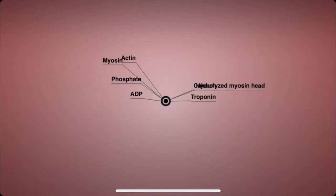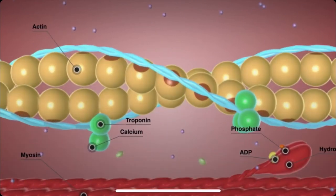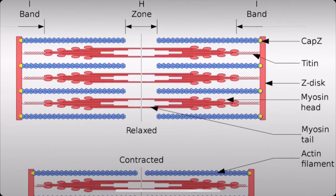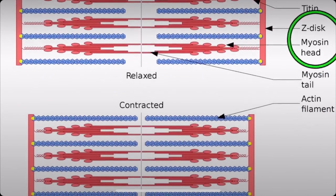The sarcomere is the basic unit of skeletal muscle and the smallest contractile unit. This is where the actin and myosin are located.